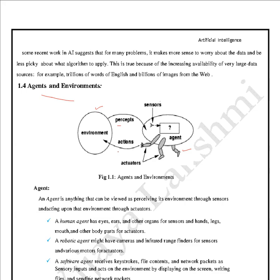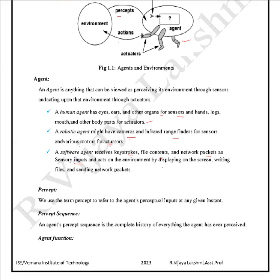An agent can be a program, a human, or a robot. A human agent has eyes, ears, and other organs as sensors, and mouth and other body parts as actuators. A robotic agent might have cameras or infrared range finders for sensors and various motors for actuators. A software agent receives keystrokes, file contents, and network packets as sensory inputs, and acts by displaying on screen, writing files, and sending network packets.